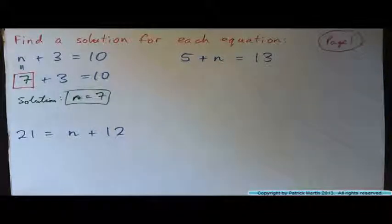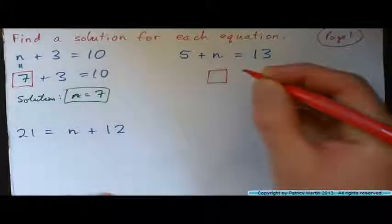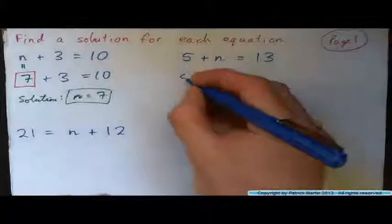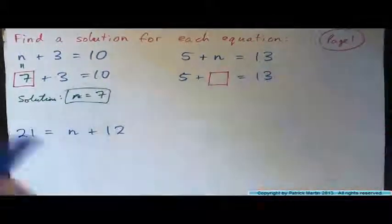So five plus n equals thirteen. What do I stick in the box to make this thing true? Five plus what gives thirteen? Write in the answer.